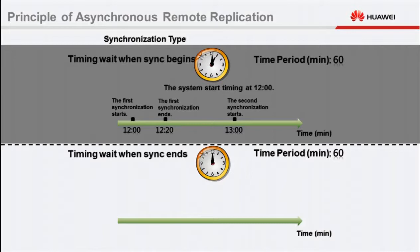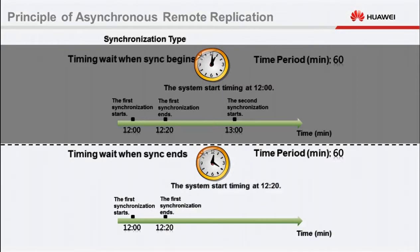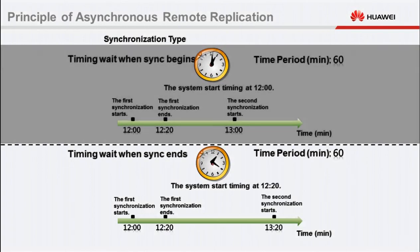The period from 12 to 1 o'clock PM is a synchronization period. If data synchronization is not complete within this period, the storage system waits until the synchronization is complete and then starts the next data synchronization. If you select timed wait when synchronization ends, the storage system does not start timing when the initial synchronization starts at 12 PM. The storage system starts timing after 20 minutes, when incremental data synchronization is complete. 60 minutes later, at 1:20 PM, the storage system starts the second synchronization.